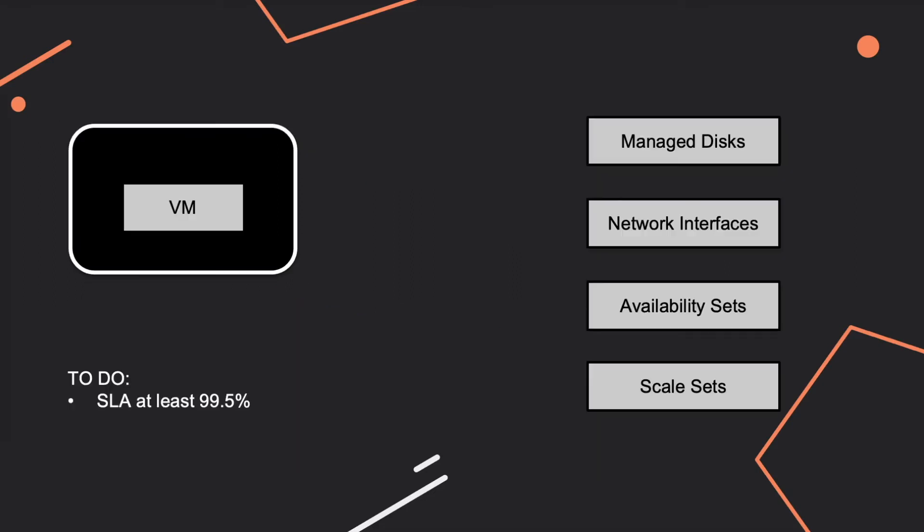We already discussed SLA and what you need to do to guarantee a certain value for it. You can also get a question where you have a virtual machine and are given different options - you have to know which one will help keep the SLA at a required level. Options could include managed disks, network interfaces, availability sets, and scale sets.